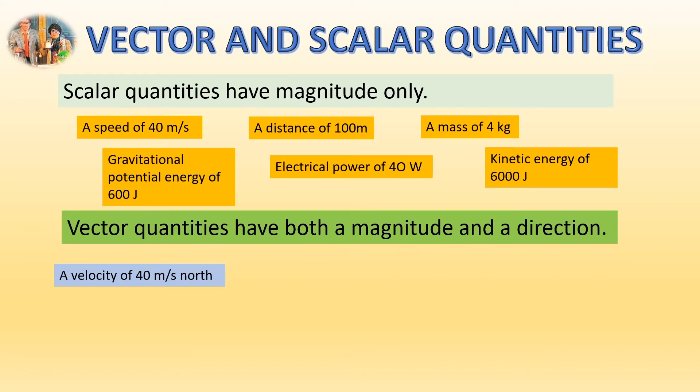Distance also has a vector version: displacement. Okay, so here we've got the magnitude of 100 meters, that's the distance part of it. But it's moved in a particular direction. So it's now a displacement of 100 meters southeast from the original starting position. Again, your directions can be very simple. It could be a positive sign, it could be a minus sign, it could be left, right, up, down, it could be forwards, backwards. Okay, any type of direction makes something a vector.